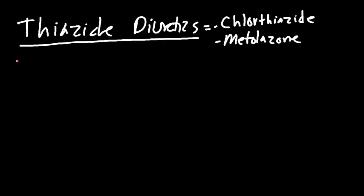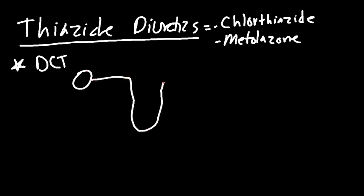We're talking about diuretics that work on the distal convoluted tubule. Remember, we have our glomerulus, proximal tubule, descending loop, ascending loop, distal convoluted tubule, and collecting duct. We're going to be focusing on the distal convoluted tubule and the mechanism of action of a thiazide diuretic.